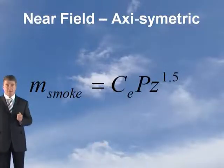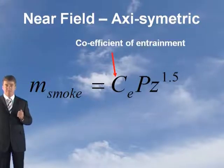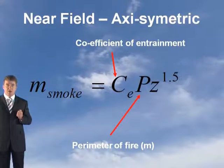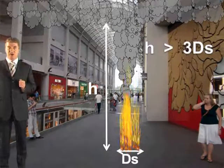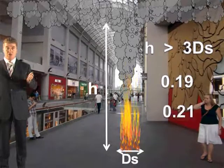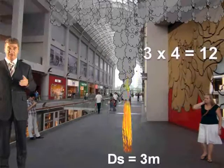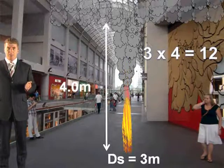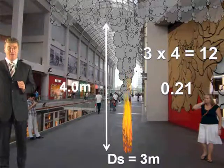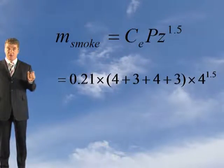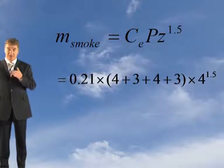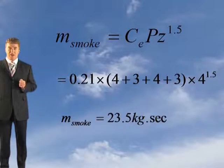This is the formula you have to apply: M equals CEP times Z to the 1.5, where M is the mass flow rate in kilograms per second, CEP is the coefficient of entrainment, P is the perimeter of the source, and Z is the clear layer height in metres. We need to establish which coefficient to use. If the clear layer height is greater than three times the longest dimension of the source, use 0.19; if not, use 0.21. In this case, three times four is 12, which is greater than the clear layer height, so we apply 0.21. Putting it all in: 0.21 times P, where P is the perimeter (4+3+4+3), multiplied by the height four to the power of 1.5, gives 23.5 kilograms per second.